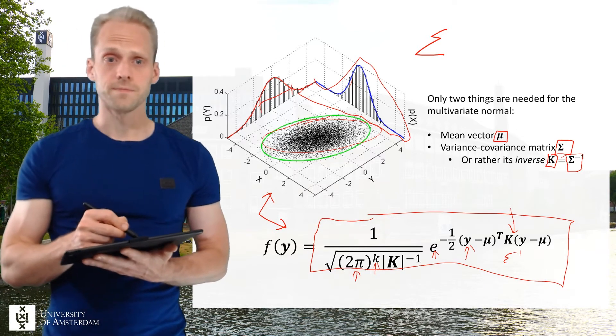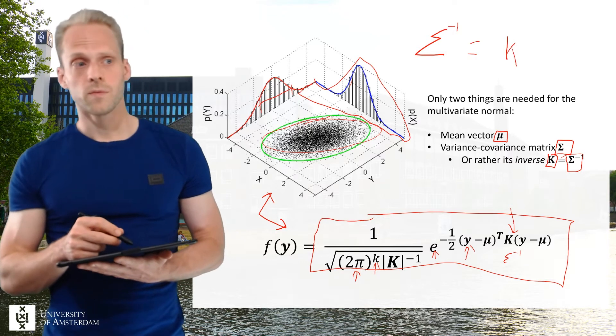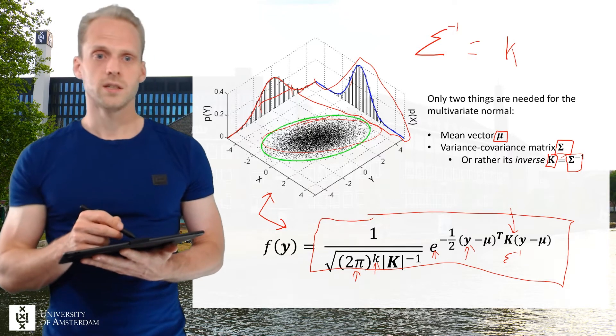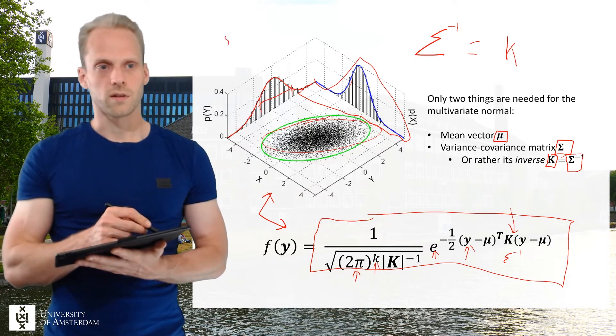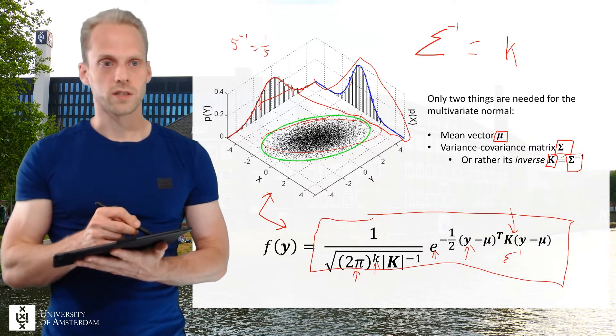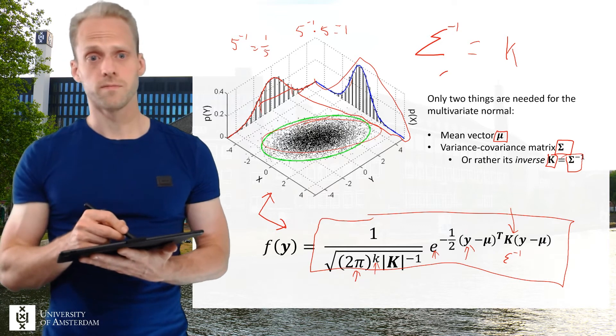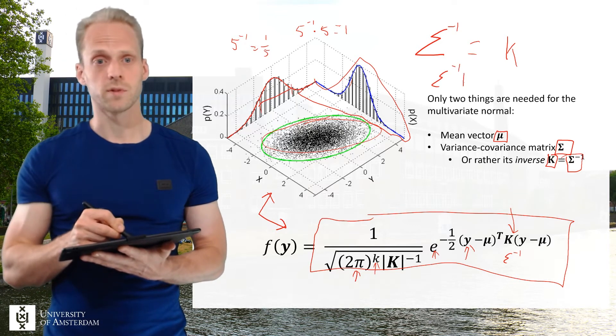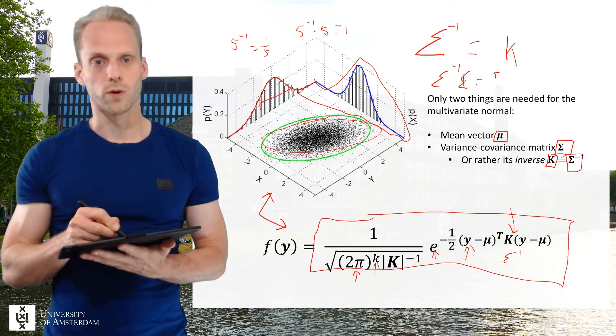Now the inverse of sigma equals kappa. The inverse of a matrix is similar to the inverse of a number. So let's say if you have five, then the inverse of that is one over five such that five inverse times five equals one. Similar with matrices, the inverse of a matrix times sigma, so sigma times sigma inverse, equals what we call an identity matrix.